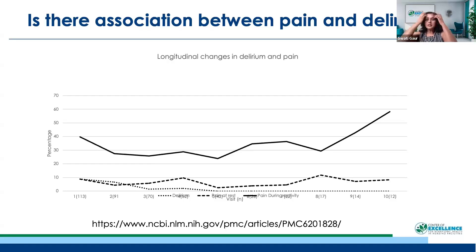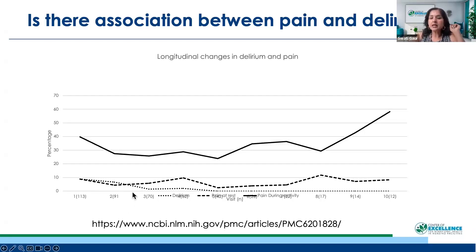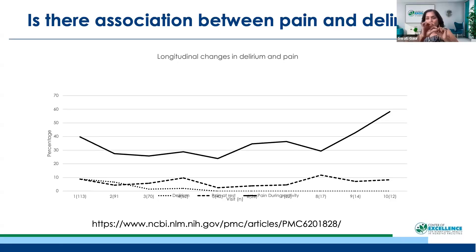This is a study done in acutely hospitalized patients. The top line is pain during activity, the long dashed line is pain during rest, and the dotted line is delirium. As you see, pain during rest is very closely associated with delirium.